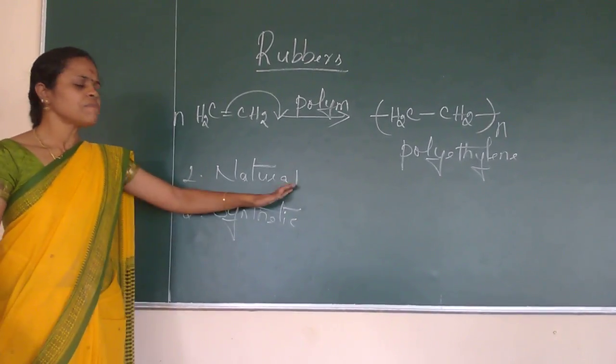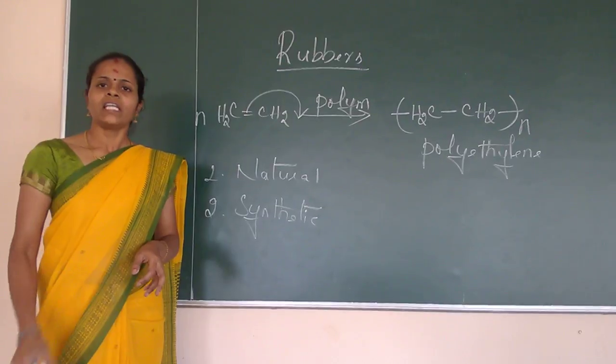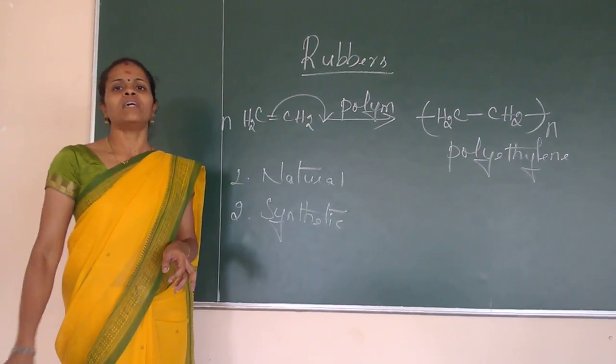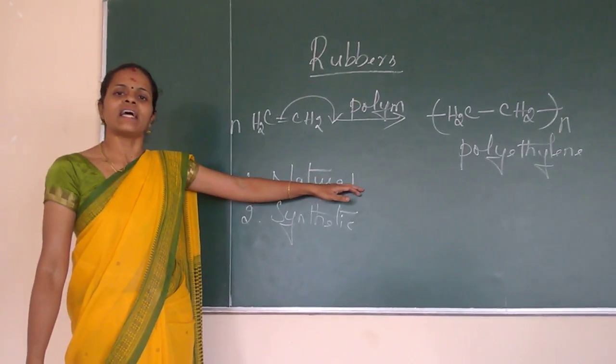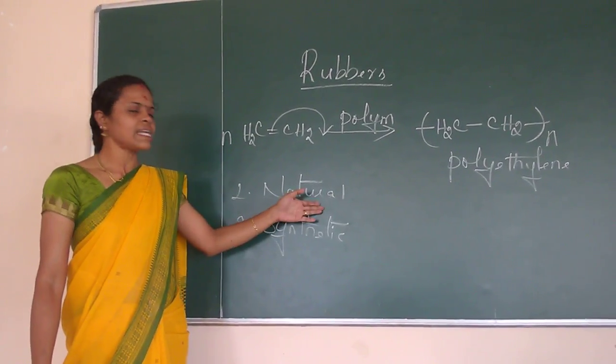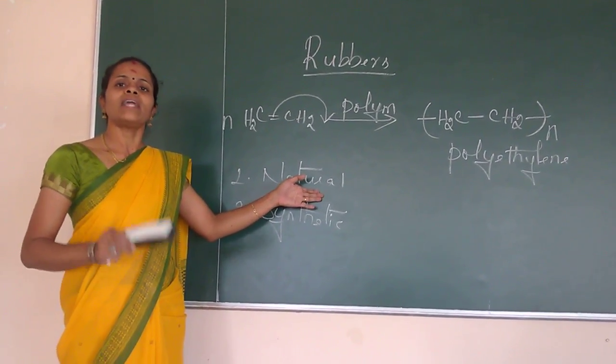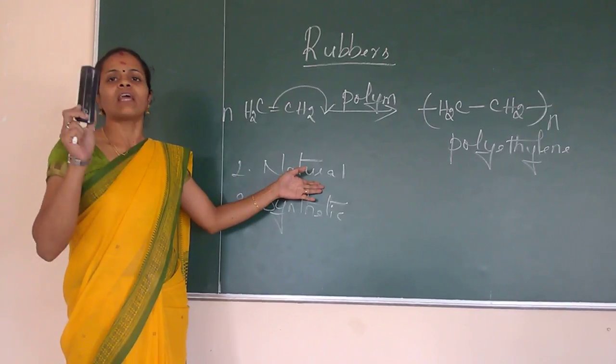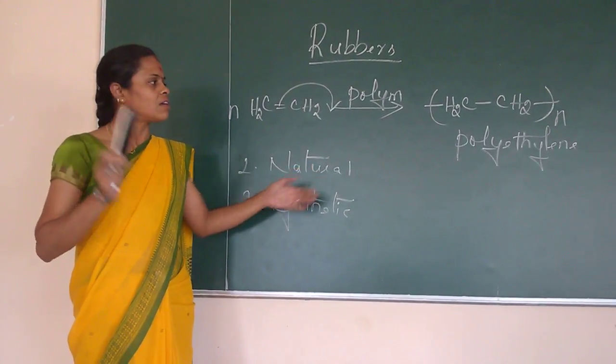First type is natural and the second one is synthetic or manmade. So what is mean by natural rubber? If you can prepare a rubber from the nature means that we can call it as a natural rubber. For example, I am going to write the chemical formula or chemical structure for natural rubber.